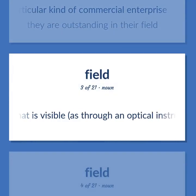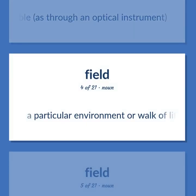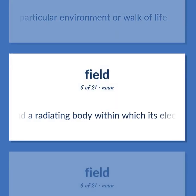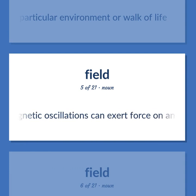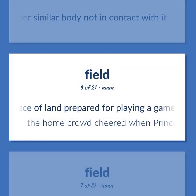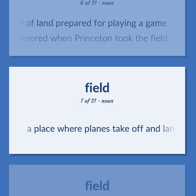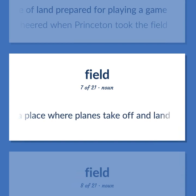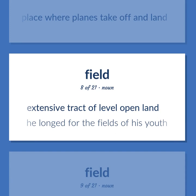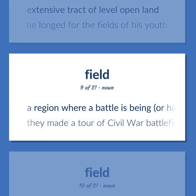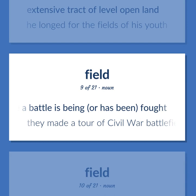Field: The area that is visible, as through an optical instrument. A particular environment or walk of life. The space around a radiating body within which its electromagnetic oscillations can exert force on another similar body not in contact with it. A piece of land prepared for playing a game — the home crowd cheered when Princeton took the field. A place where planes take off and land. Extensive tract of level open land — he longed for the fields of his youth. A region where a battle is being, or has been, fought — they made a tour of Civil War battlefields.